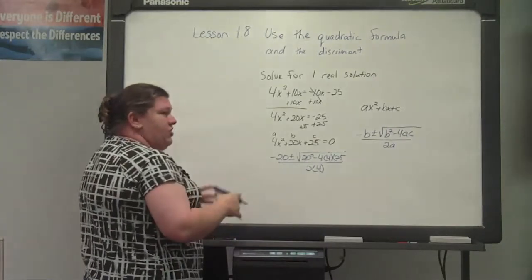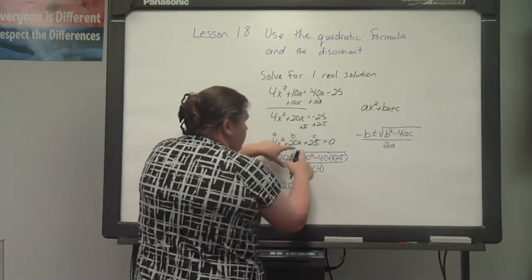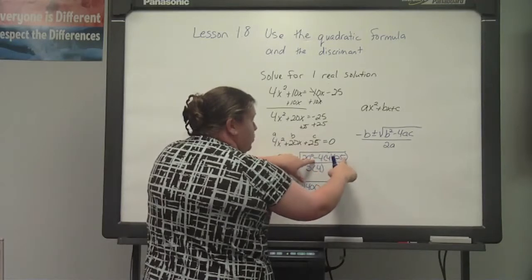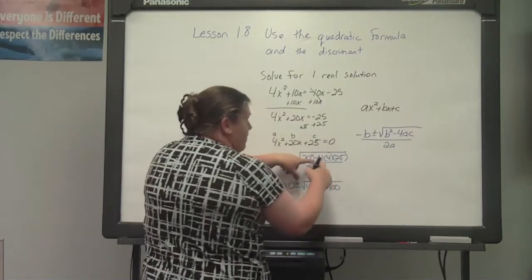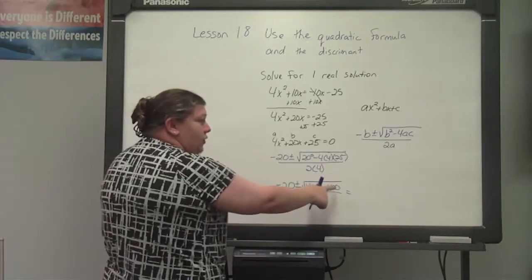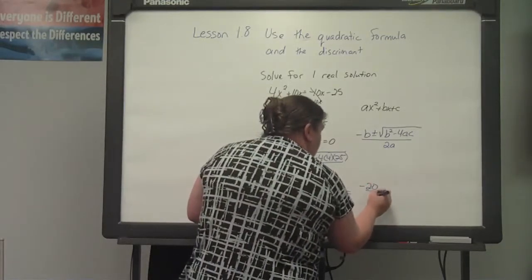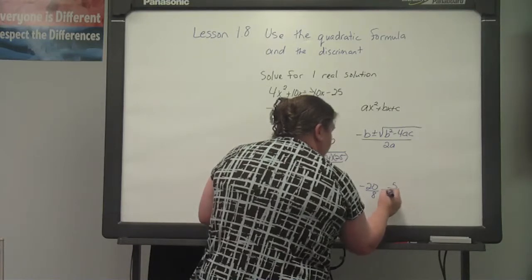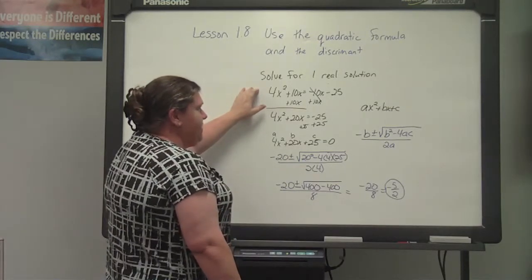We want to begin solving. I keep my negative 20 plus or minus — 20 squared is 400. Then 4 times 25 gives 100, times 4 gives 400, and it's minus 400. All of that over 2 times 4, which is 8. We can see that 400 minus 400 is 0, which cancels out our square root. So what we have left is negative 20 over 8, which reduces to negative 5 over 2. That is our one real solution for 4x squared plus 10x equals negative 10x minus 25.